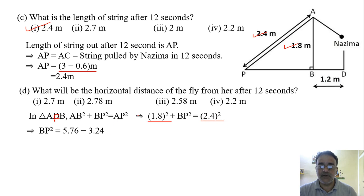We'll shift 3.24 to the right hand side, so it will become minus 3.24. So 5.76 - 3.24 equals 2.52. Now the square root of 2.52 is approximately equals to 1.58 meter.